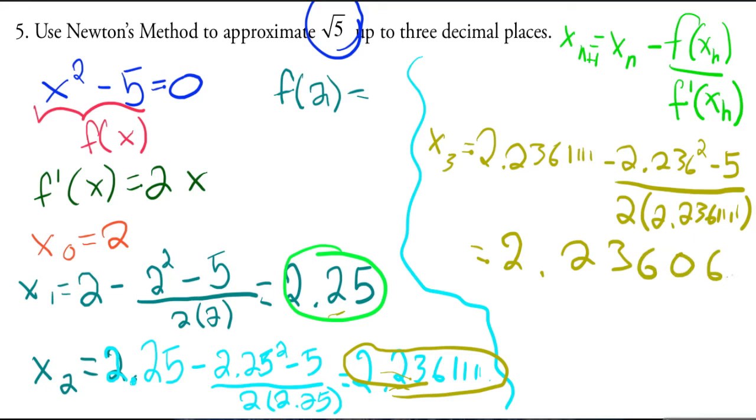2.23606 blah blah blah. So notice this time I have three decimal places that match, so this is my approximation up to three decimal places, and that's it.